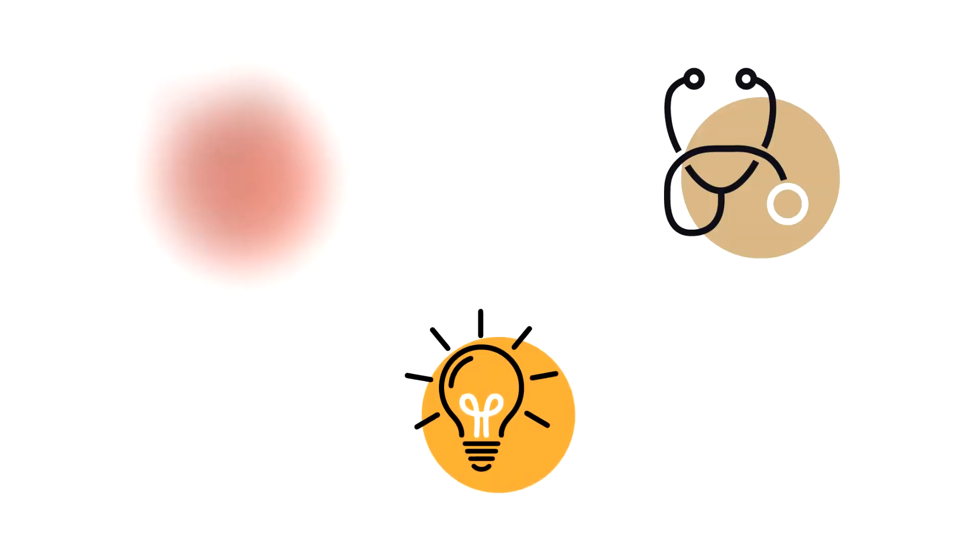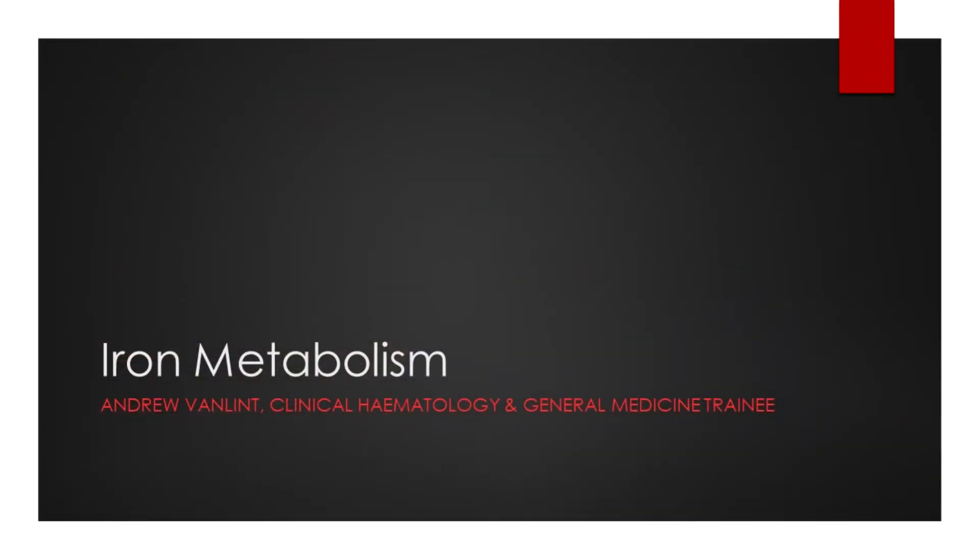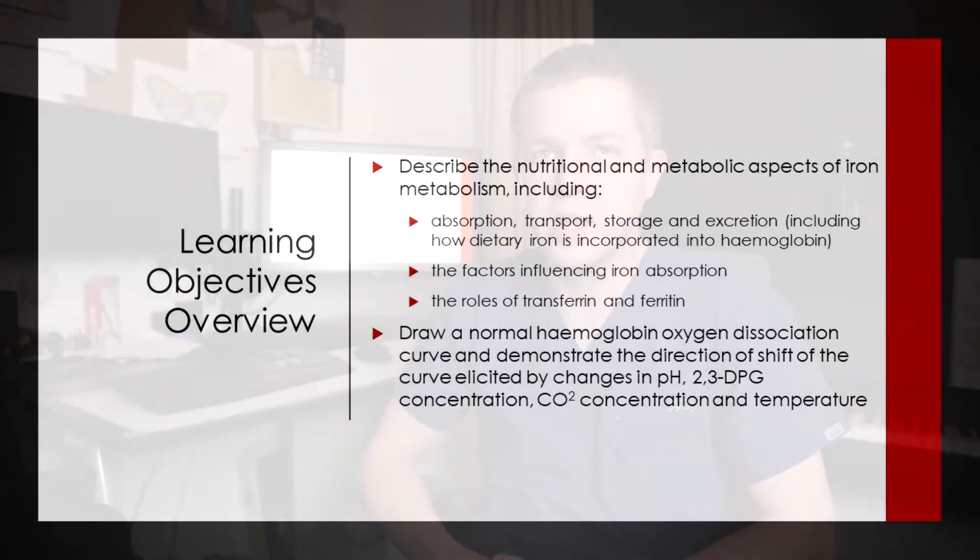Hi, Andrew here. Today we're going to be talking about iron metabolism, something that's very important to us hematologists but isn't strictly owned by us as it's more of a metabolic process. This is an instructional video for the University of Adelaide Medical Program, but I've made it available since there's lots of people interested in iron metabolism and hemoglobin. The learning objectives are to describe the nutritional and metabolic aspects of iron metabolism and to talk about the oxygen dissociation curve and the different elements that influence it, because that's one of the main functions of hemoglobin - carrying and letting go of oxygen at various points.